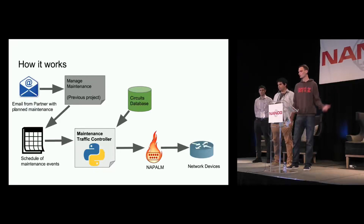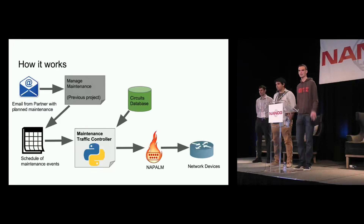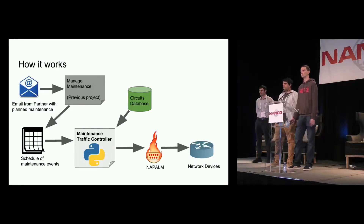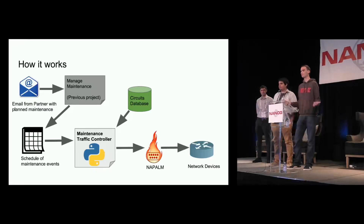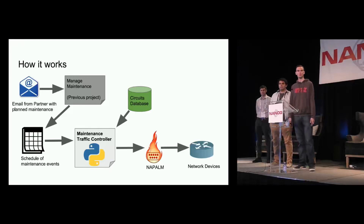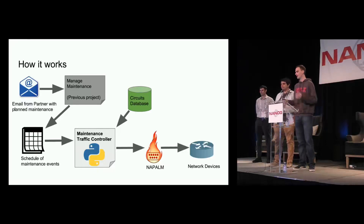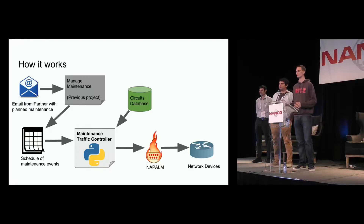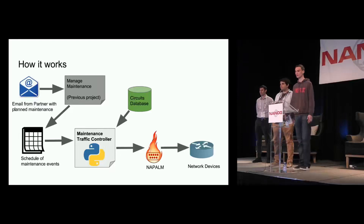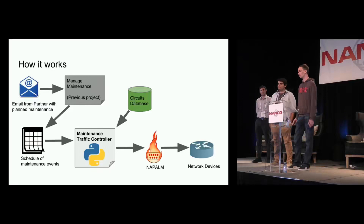The Python process pulls the events out of the schedule and combines them with data in our circuits database — for the purpose of this hackathon, we just made a mock circuits database. We then chose to use Napalm and some Jinja2 scripts to actually kick off the traffic shifting. The reason we chose Napalm and Jinja2 is that everyone has their own flavor of network and their own preference for how they would shift traffic off of links, so we didn't want to give a one-size-fits-all solution. The Jinja2 templates really allow everyone to implement their own version of traffic shifting.